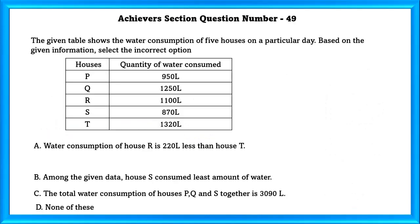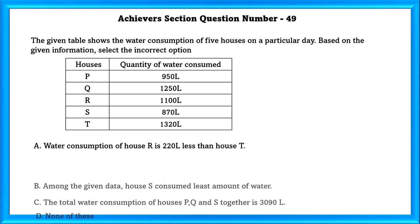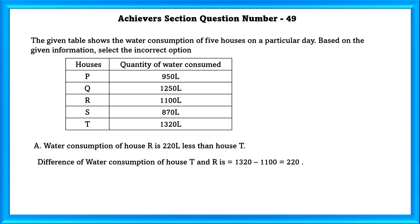Achievers Section Question Number 49: The given table shows the water consumption of 5 houses on a particular day. Based on the given information, select the incorrect option. A: Water consumption of house R is 220 liters less than house T. Let us check this. Difference of water consumption of house T and R is equal to 1320 minus 1100, which is equal to 220. So, this statement is correct.